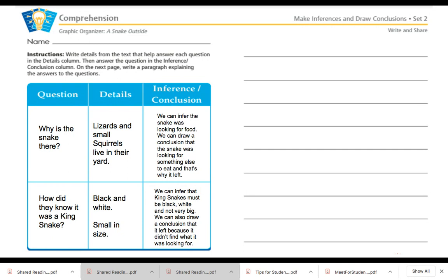Okay, let's see how we did. So when I went back into this passage and I was looking at the details, the text clues that the author provided us, I read that lizards and small squirrels lived in their yard. That was something that they told us in the text, directly stated. So because of the lizards and small squirrels living in their yard, I took that information, what I know about snakes already, and helped myself make an inference that the snake maybe was looking for food. We can draw a conclusion that this snake was possibly looking for something else to eat other than lizards and squirrels, and that's why it left.